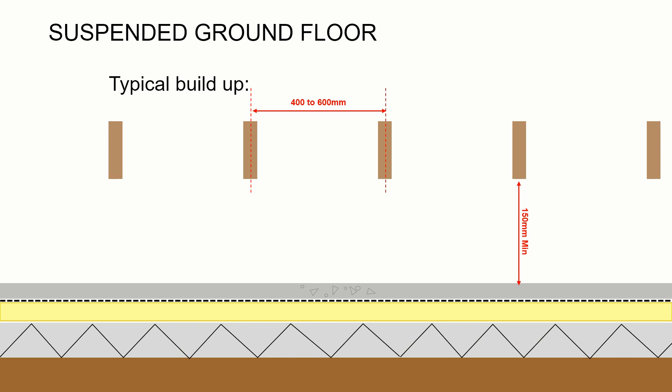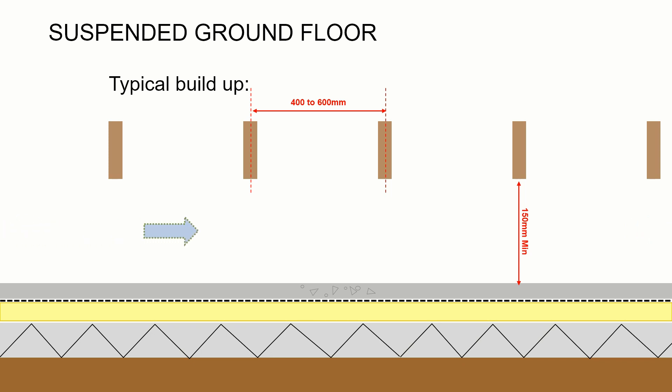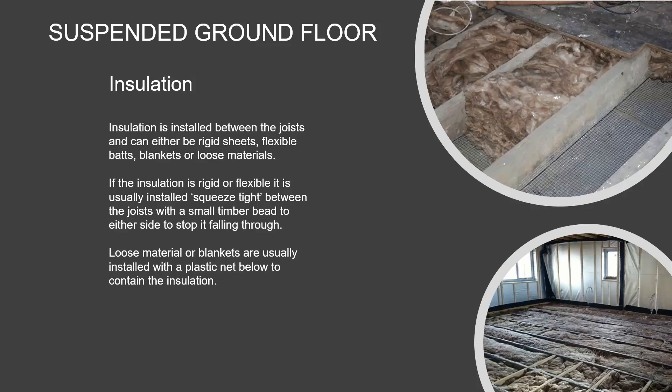The height between the top of the solum and the underside of the joists is important. There's a minimum size of 150 millimetres to ensure adequate air passes through that space and there's sufficient volume of air movement to ventilate the subfloor.